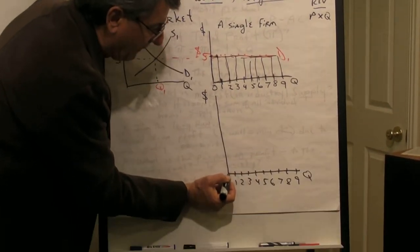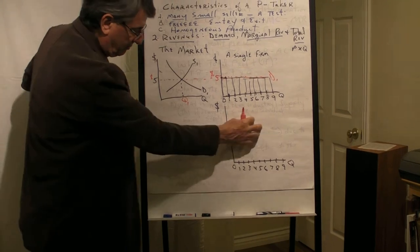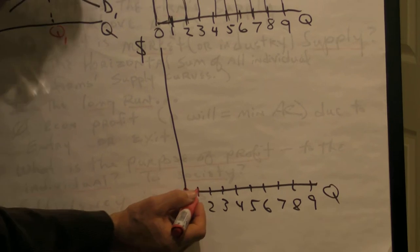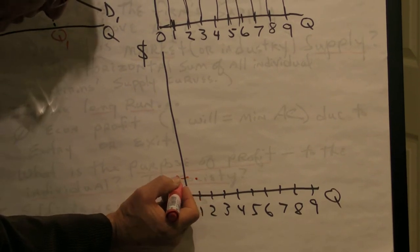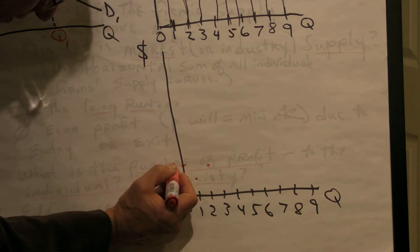So if we graph the total revenue curve on this diagram here, then when the firm sells zero units, its total revenue is zero. When it sells one unit, total revenue is five. When it sells two units, total revenue is 10.